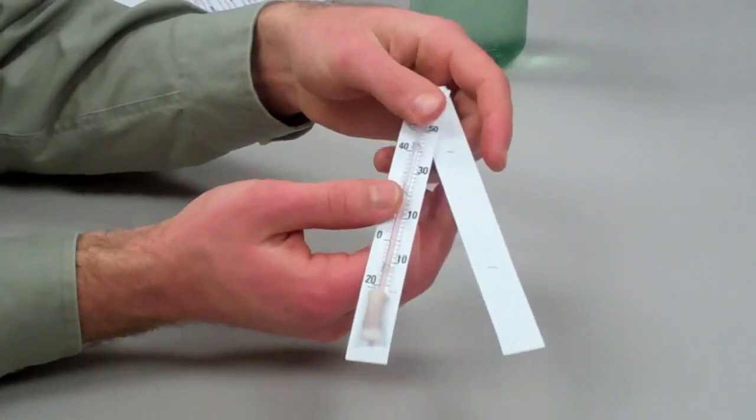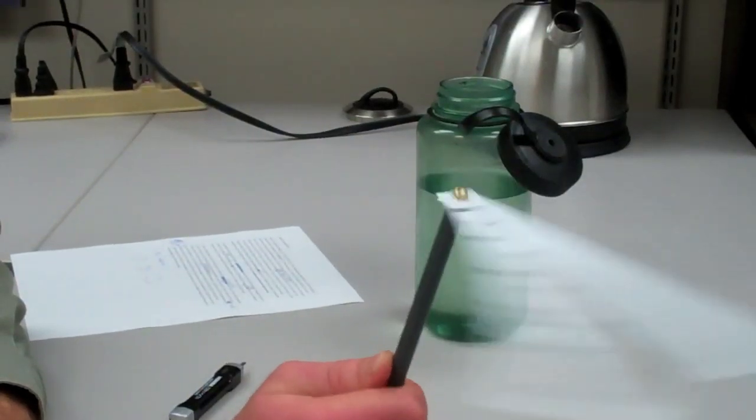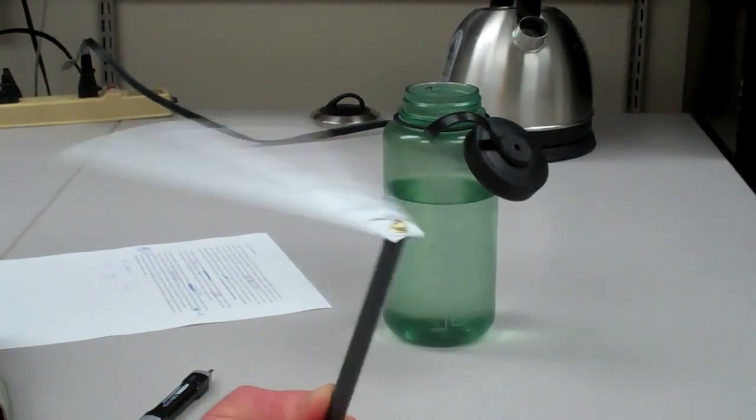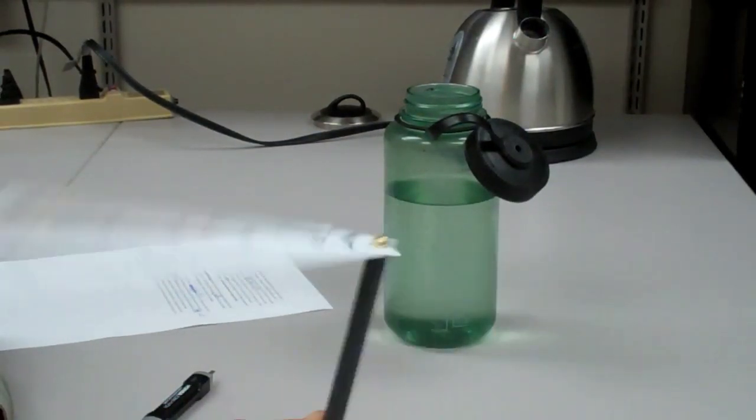Spread the thermometers apart and whirl them about for around a minute. And then look at the wet bulb to see the difference between it and the dry bulb temperature. This is the wet bulb depression.